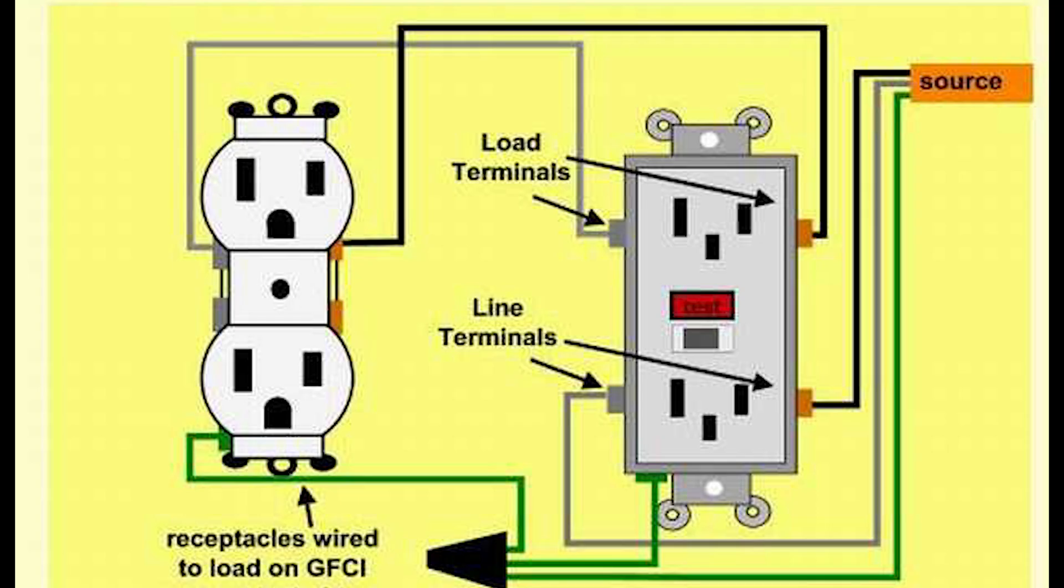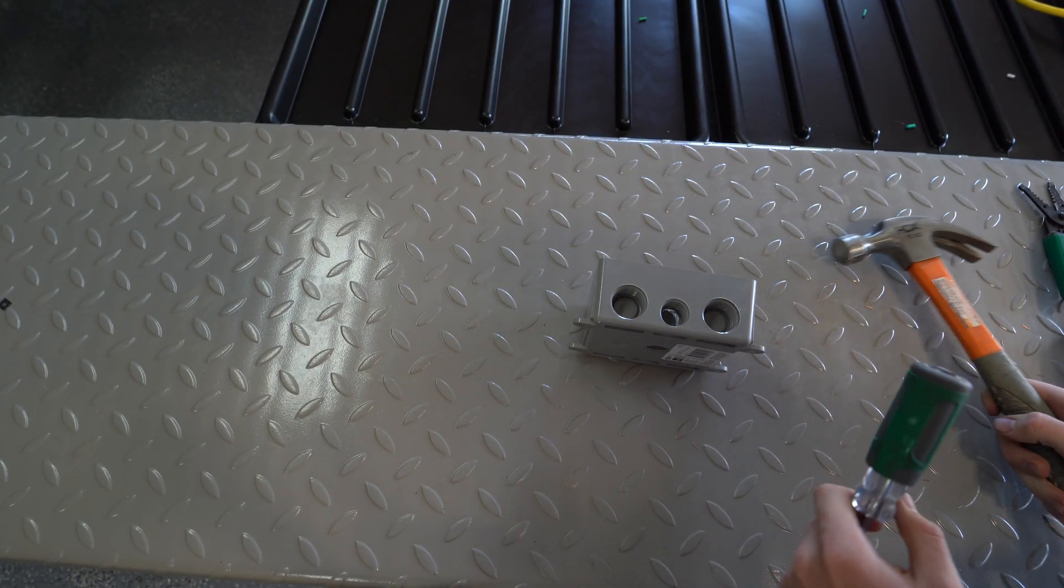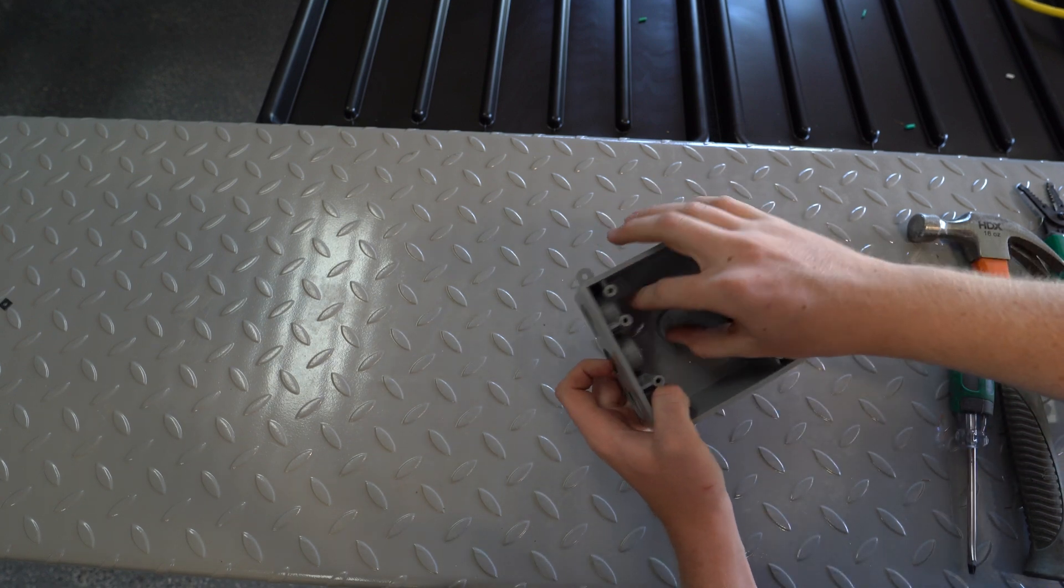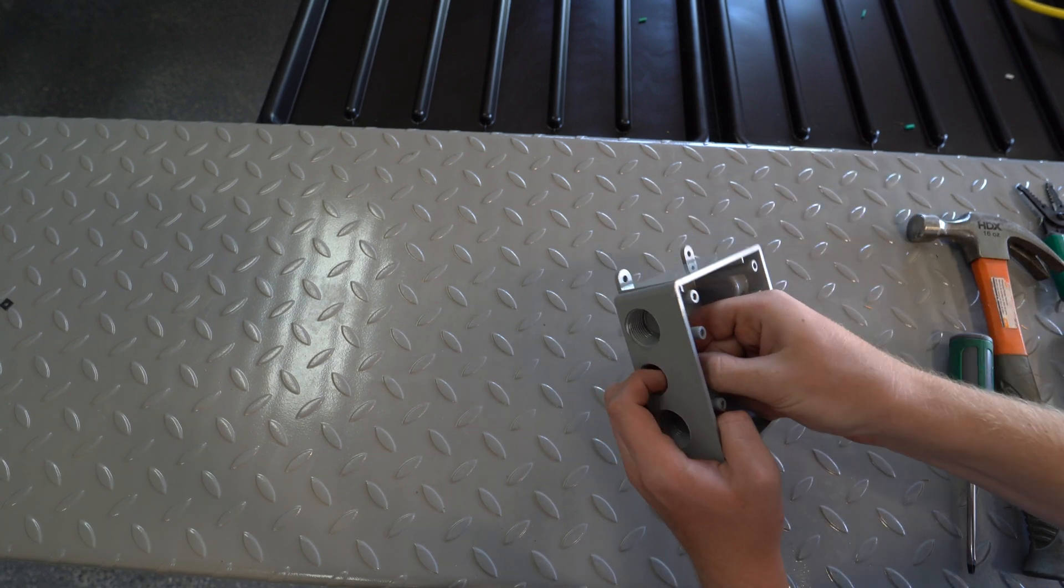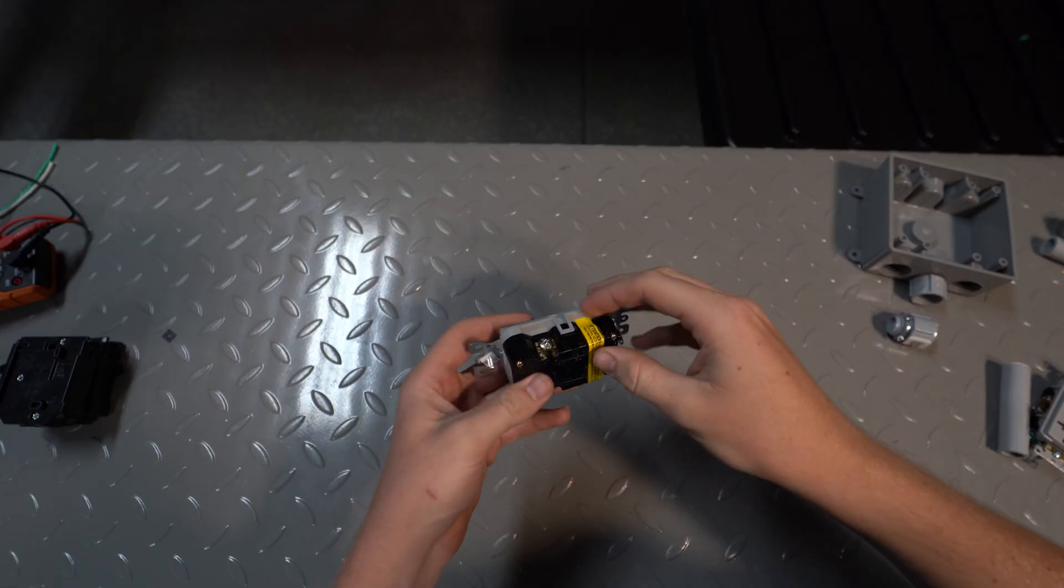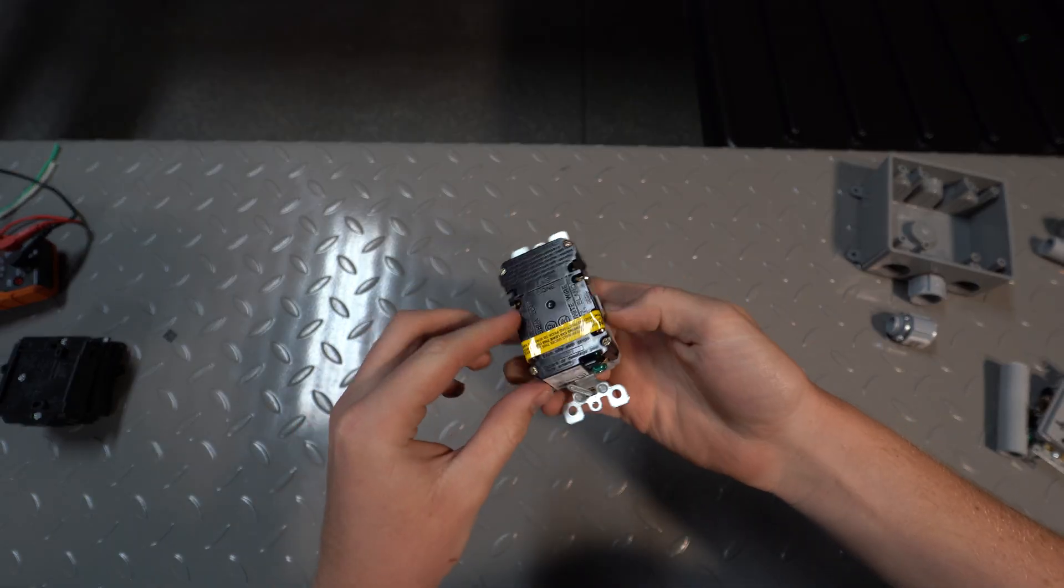Now we're going to add a new circuit to the breaker box. All garage outlets must be wired to a GFCI. Pop out the cap on the plastic electrical box. This yellow sticker indicates the load side of the GFCI.